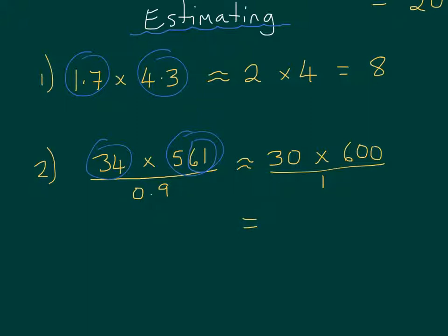So 30 times 600 divided by 1. 3 times the 6 is 18. And I've got 1, 2, 3 zeros. So 1, 2, 3. That's 18,000 divided by 1. Well, any number divided by 1 is just that same number. So the answer is 18,000. Well done if you got that one too.